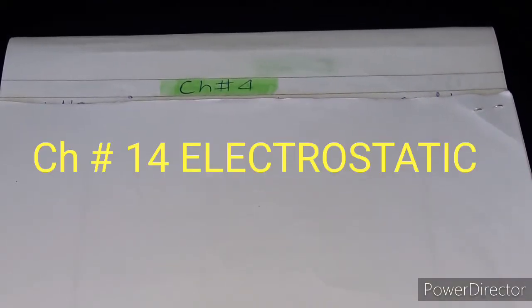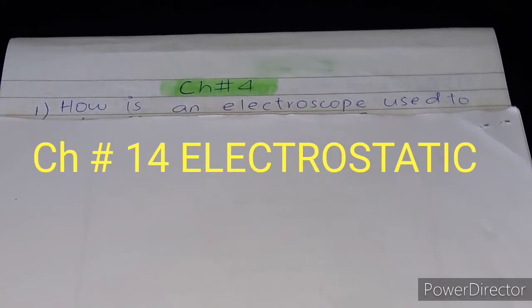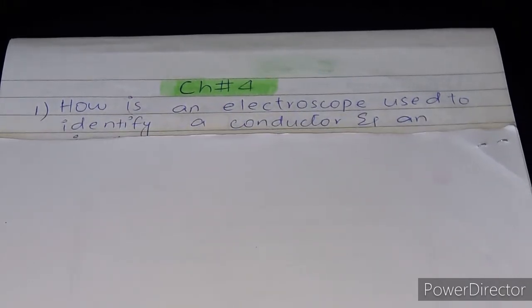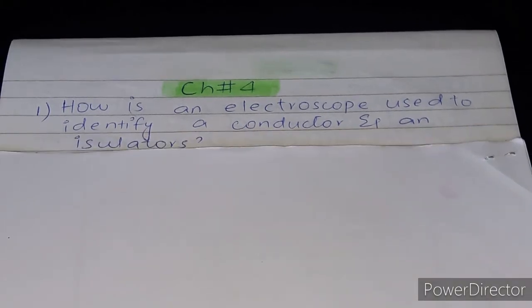Now I will tell you about the important questions of chapter number 14. Question number 1: How is the electroscope used to identify a conductor and insulator?